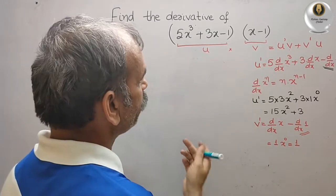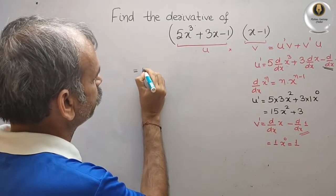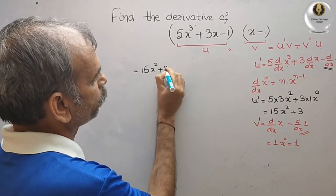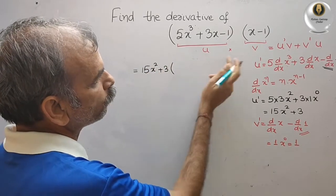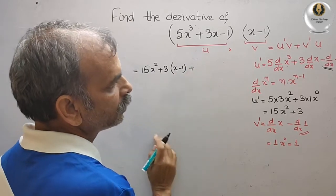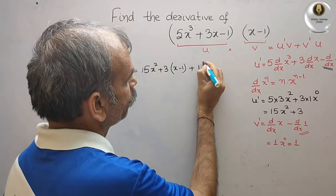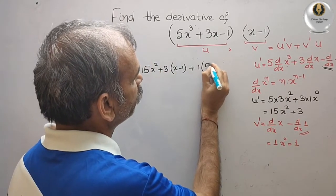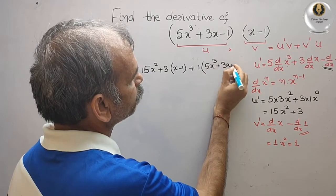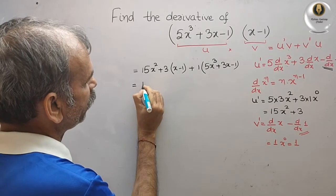Substituting, we get: u dash (which is 15x² + 3) into v (which is x - 1), plus v dash (which is 1) into u (which is 5x³ + 3x - 1). Now we solve this by expanding.